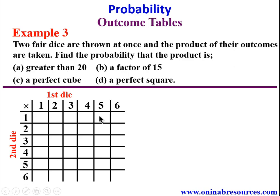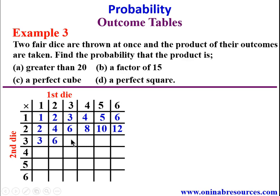For each cell we find the product of the corresponding values. Row 1: 1×1=1, 2×1=2, 3×1=3, 4×1=4, 5×1=5, 6×1=6. Row 2: 1×2=2, 2×2=4, 3×2=6, 4×2=8, 5×2=10, 6×2=12. Row 3: 1×3=3, 2×3=6, 3×3=9, 4×3=12, 5×3=15, 6×3=18.